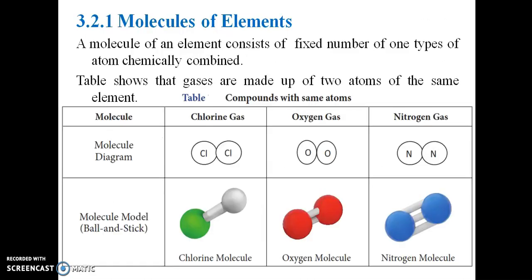Molecules of an element consist of a fixed number of one type of atom chemically combined. The table shows gases made up of two atoms of the same element — such as chlorine gas Cl2, oxygen gas O2, and nitrogen gas N2.